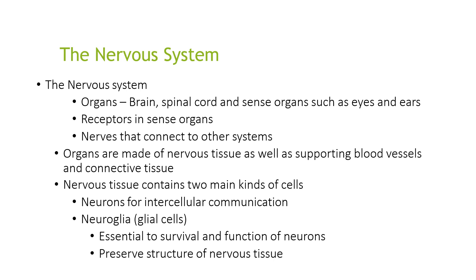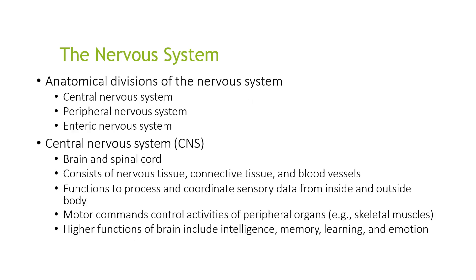Organs are made of nervous tissue as well as supported blood vessels and connective tissue. The nervous tissue contains two main kinds of cells: neurons for intercellular communication, and neuroglia — also known as glial cells — which are essential to the survival and function of neurons and preserve the structure of the nervous tissue.